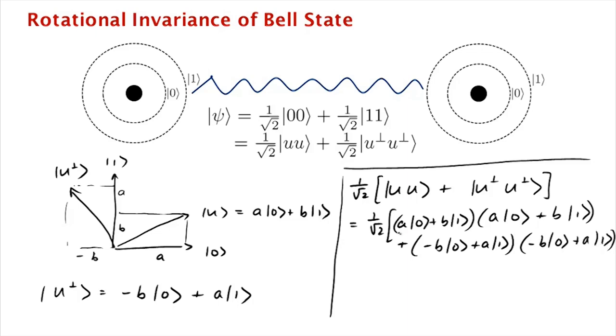So which is now substituting u and u perp, we get it's 1 over square root 2 times a0 plus b1 times a0 plus b1 plus minus b0 plus a1 times minus b0 plus a1.